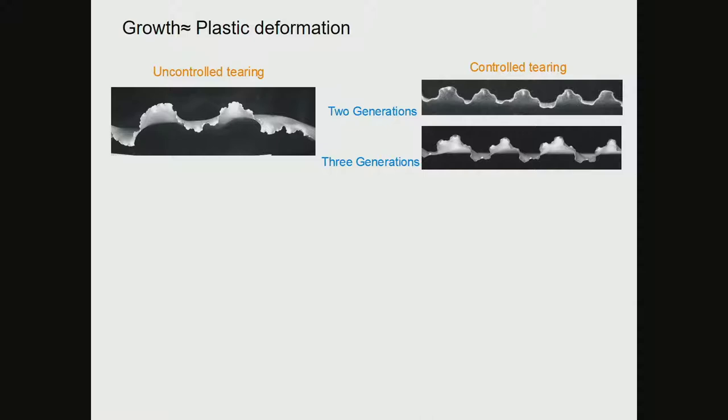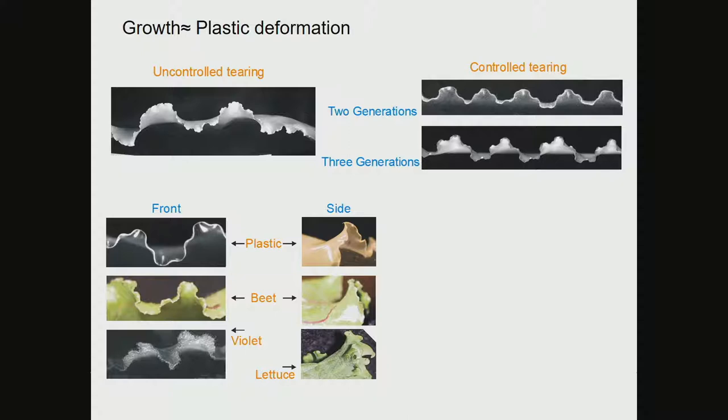Imagine you have a sheet of plastic — you just tear it. The generated edge looks like wave upon wave upon wave: a multi-scale, three-dimensional structure. Not confined, not constrained, no one bent it — it wants to be this way. You can go between generations of waves: small waves on a bigger one, three generations of waves. Looking around, in many plants and leaves you see the same typical structure: wave upon wave. This is the plastic sheet, and these are different plant tissues.